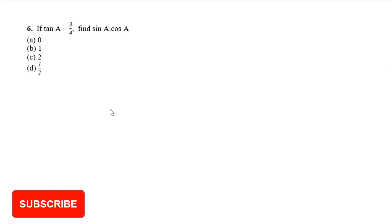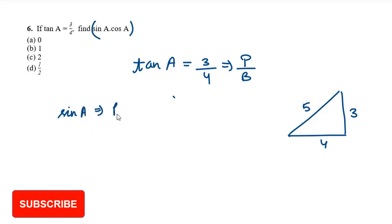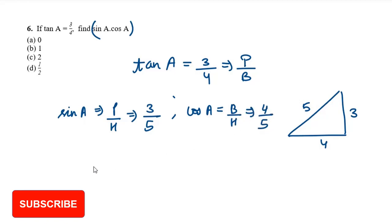Question number 6: tan A equals 3 by 4. Find the value of sin A times cos A. Tan A is P over B, so perpendicular is 3 and base is 4. Using Pythagoras, hypotenuse is 5. Sin A equals P over H, which is 3 over 5. Cos A equals base over hypotenuse, which is 4 over 5.